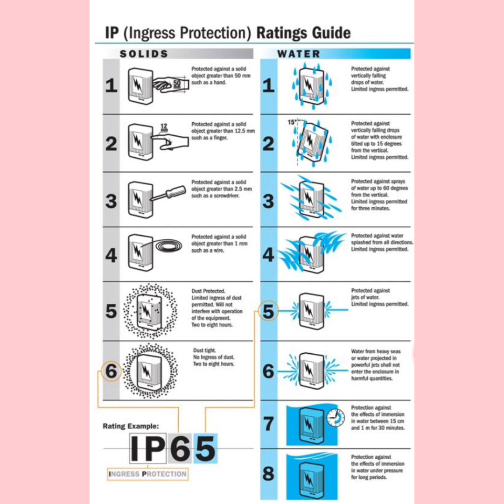IP rating is usually denoted by two numbers. The first number on the left denotes protection against solid particles, and the second number in the IP rating talks about protection against moisture or water. For solid protection, it has ratings from one to six.